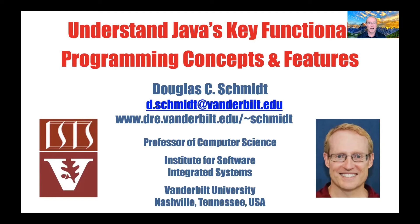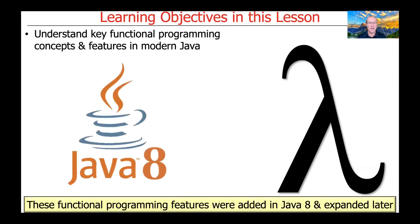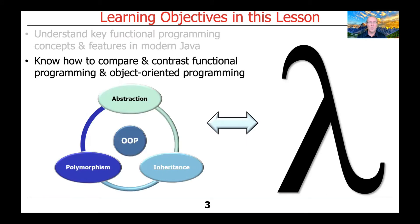We're now going to deepen our coverage of Java's declarative programming paradigm by focusing on its key functional programming concepts and features. These features and concepts were added in Java 8, which came out in 2014, and have been elaborated and expanded upon in all releases since then. We'll also talk about how to compare and contrast functional programming and object-oriented programming to see how they can each be used synergistically to solve more interesting problems together.